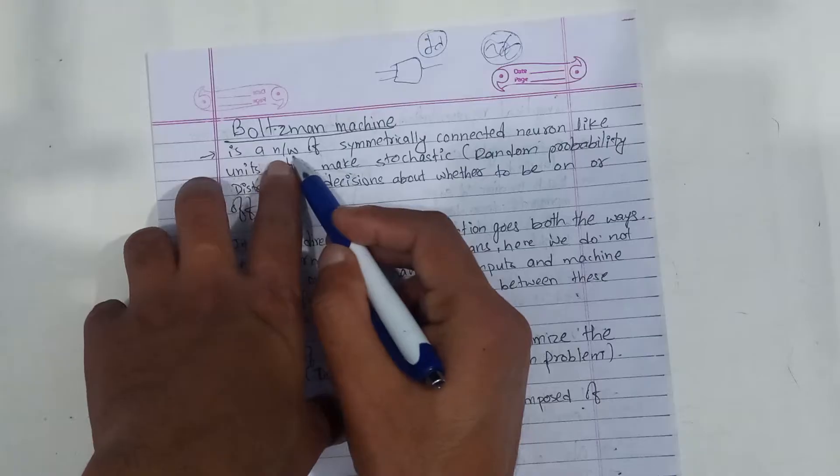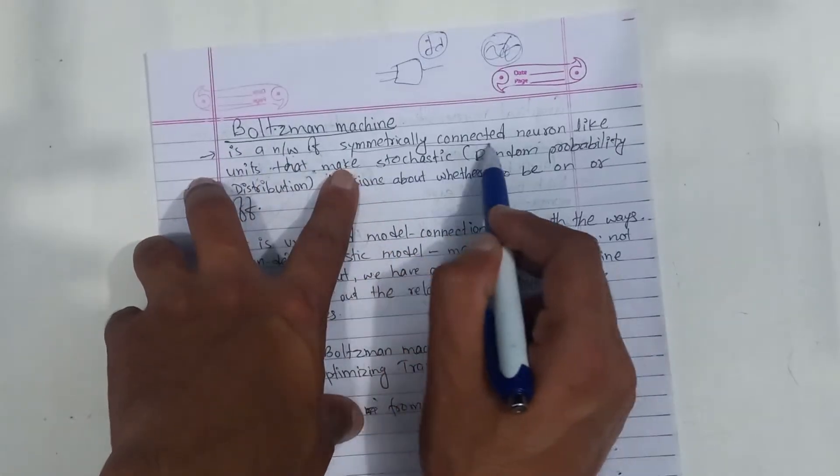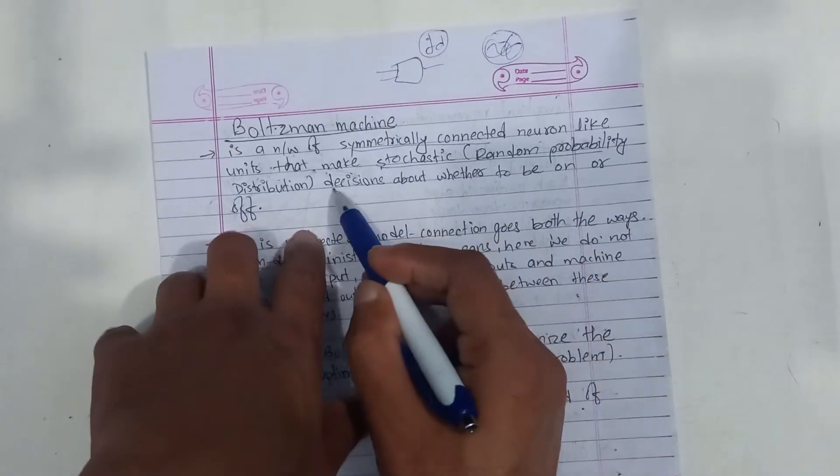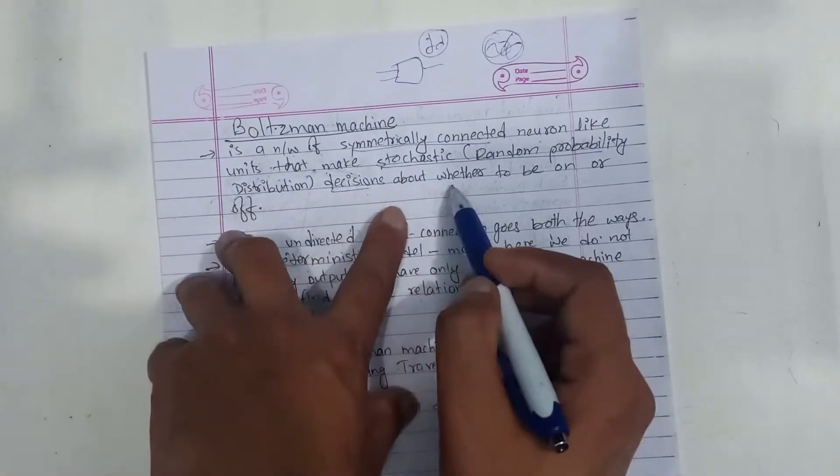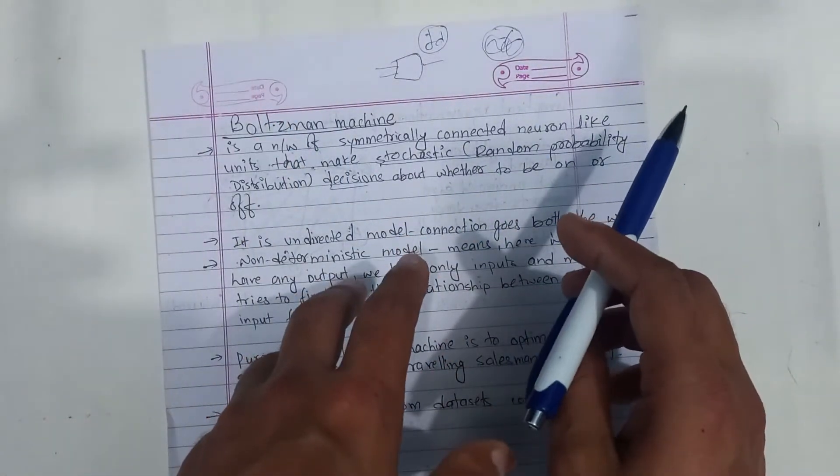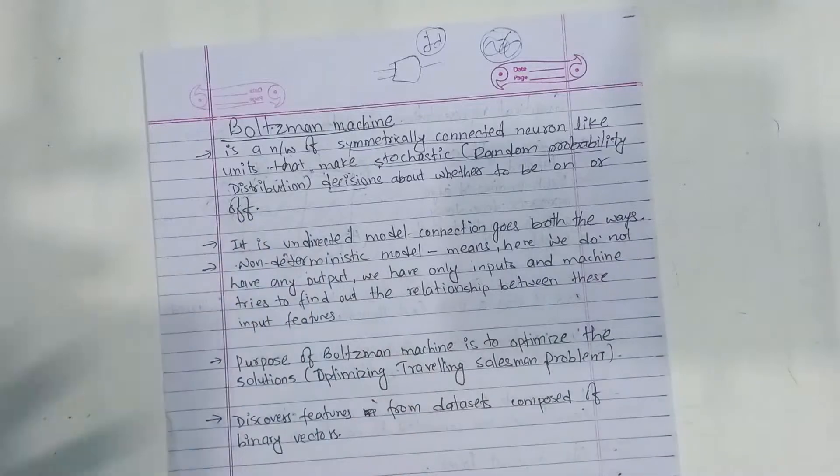Boltzmann machine is a network of symmetrically connected neuron-like units that make stochastic random probability distribution decisions. Stochastic decisions about whether to be on or off. Symmetrically connected neuron-like units. It is a stochastic decision.